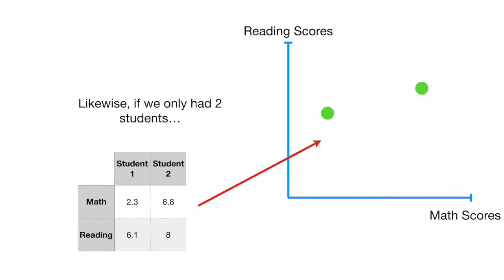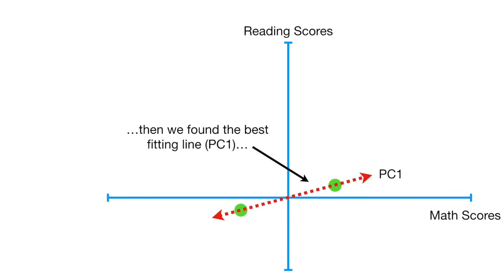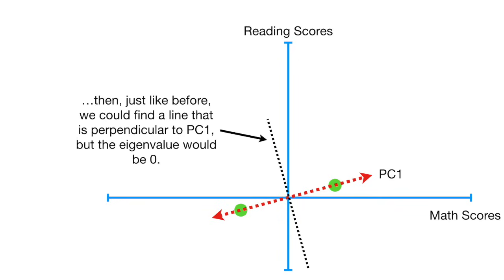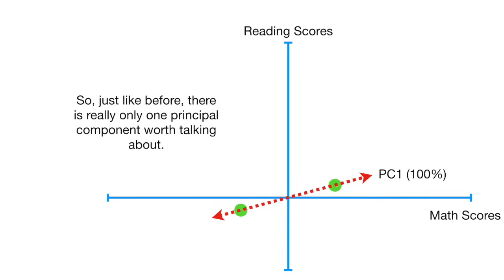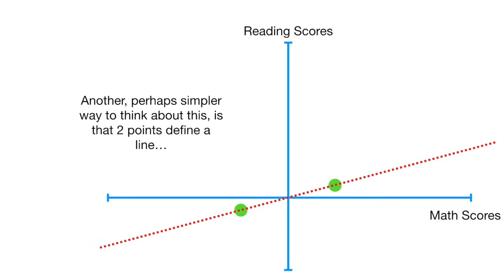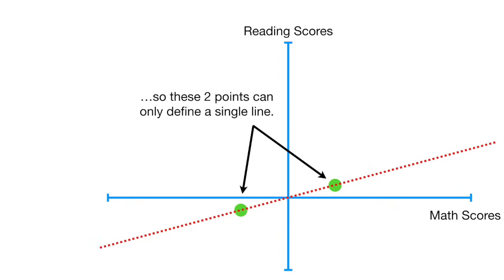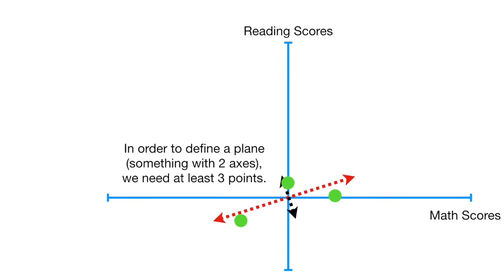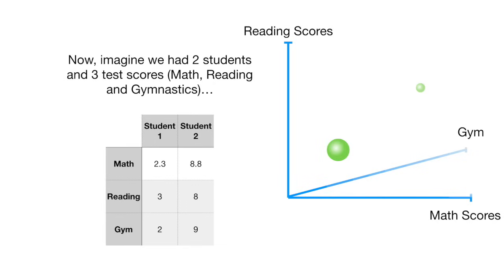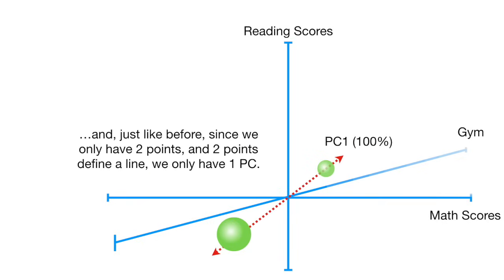Likewise, if we only had two students and centered the data and found the best fitting line PC1, just like before we could find a line perpendicular to PC1, but the eigenvalue would be 0. So there is really only one principal component worth talking about. Another, perhaps simpler way to think about this: two points define a line, so these two points can only define a single line. In order to define a plane — something with two axes — we need at least three points. Now imagine we had two students and three test scores: math, reading, and gymnastics. We can center the data, and since we only have two points and two points define a line, we only have one PC.